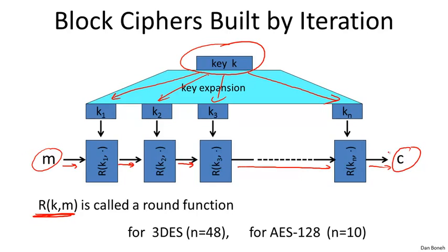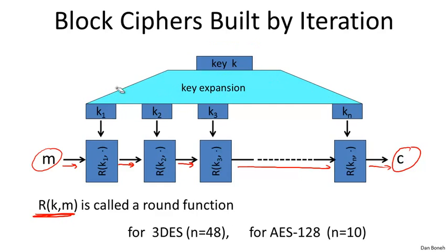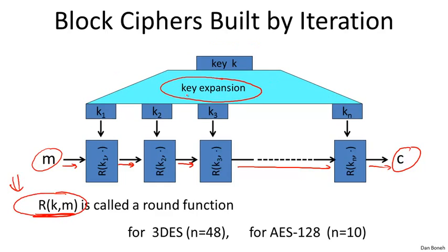To specify a block cipher of this type, one needs to specify the key expansion mechanism and one needs to specify the round function. In this segment I'm going to focus on the round function and not talk much about key expansion, but key expansion is also a big part of describing how a block cipher works.